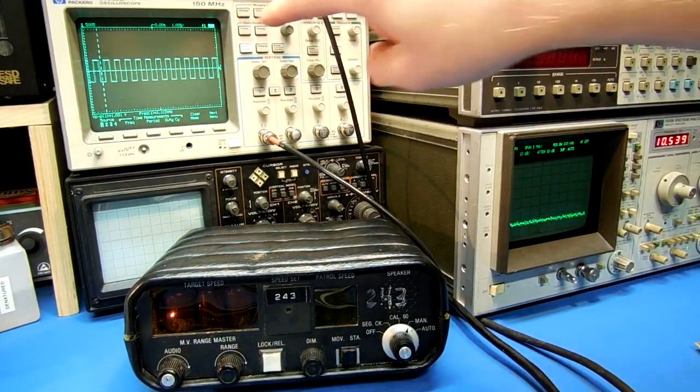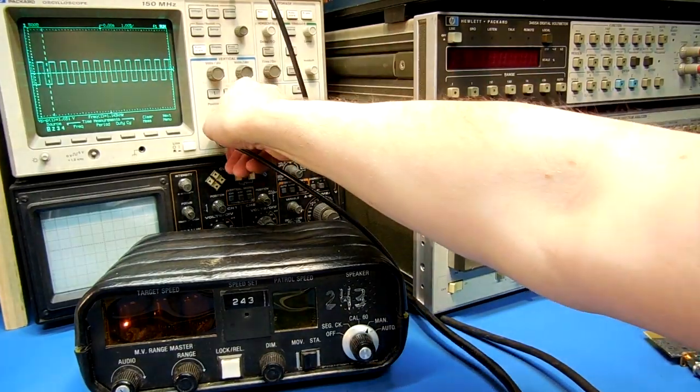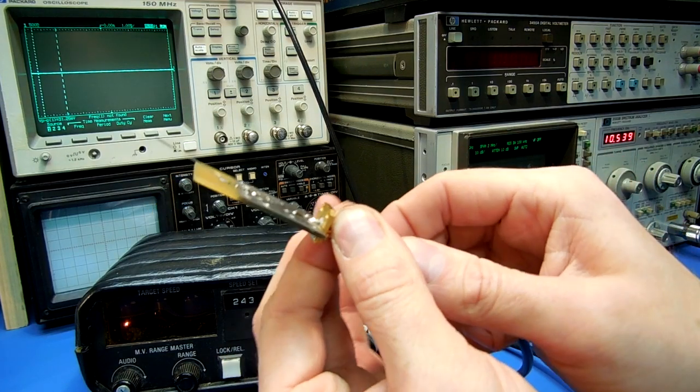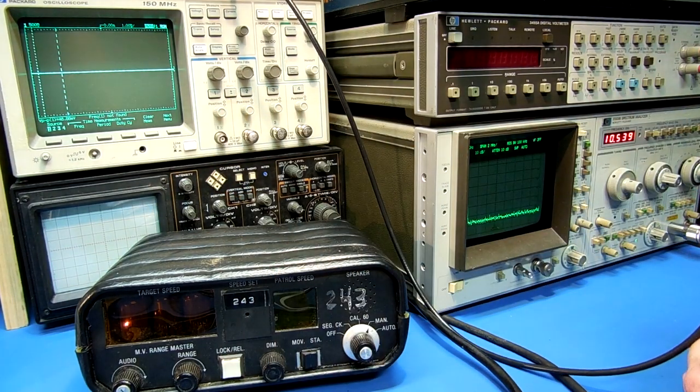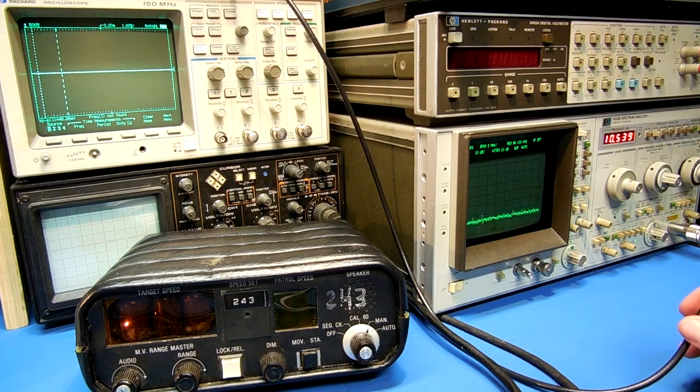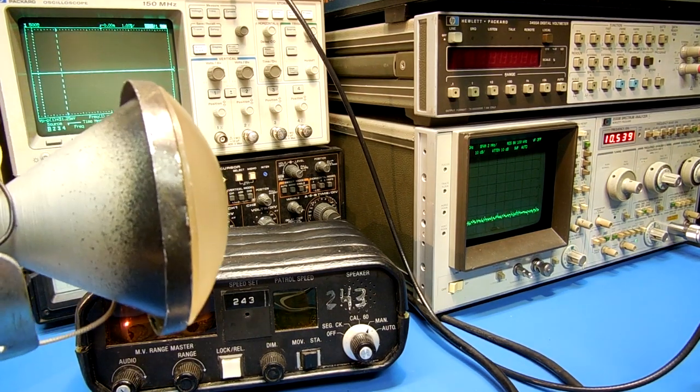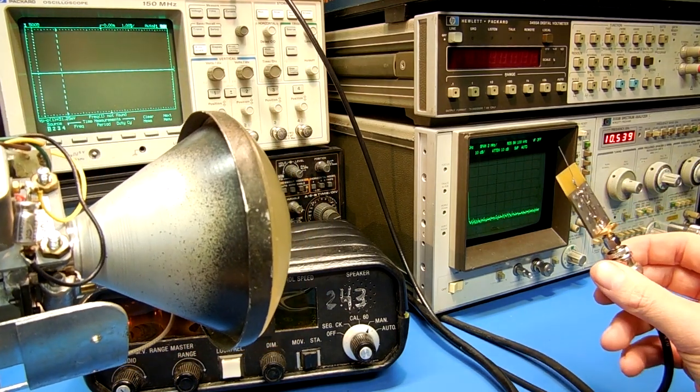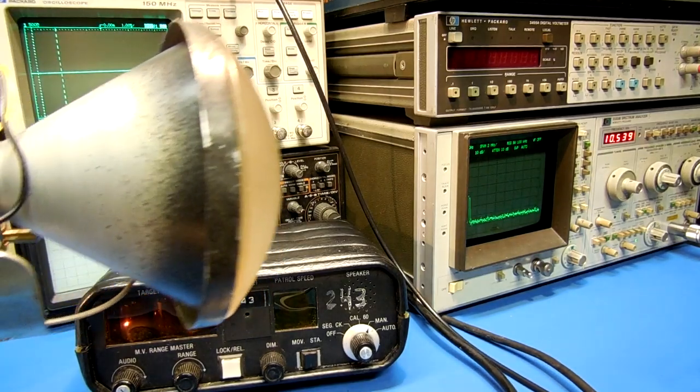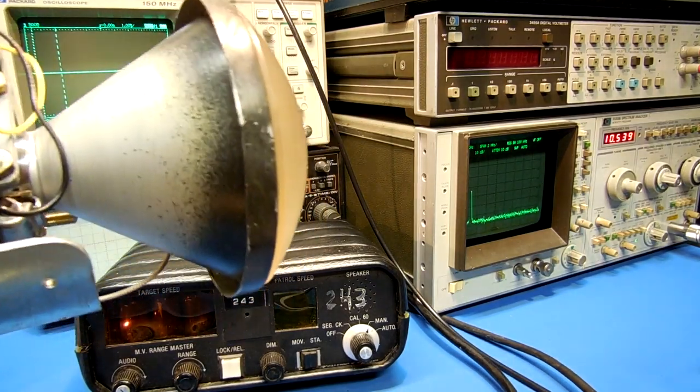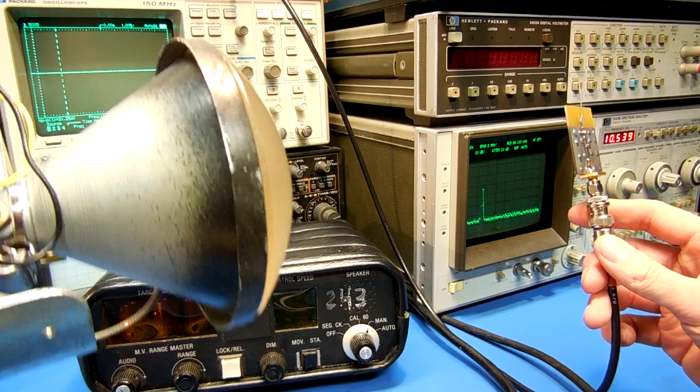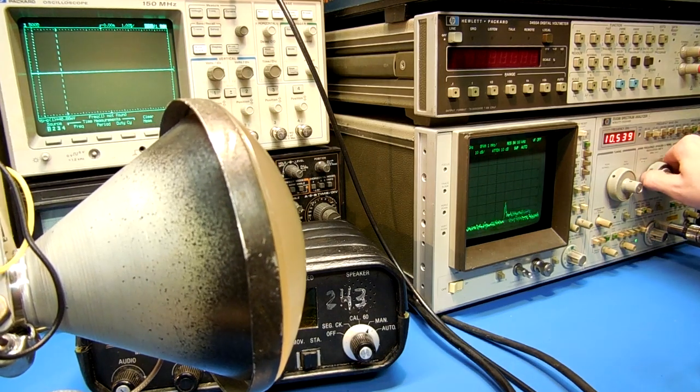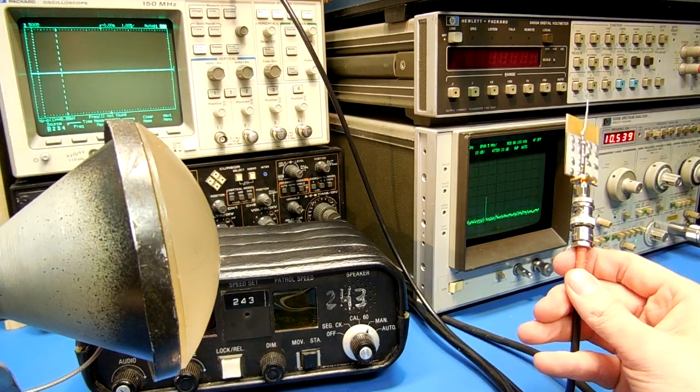That's a sweep tone from the signal generator we're going to be using. I'll run that into the little modulator board here. That's going to give us a very distinct audio backscatter signal. Here's the unmodulated noise, and there's our backscatter sweep signal.